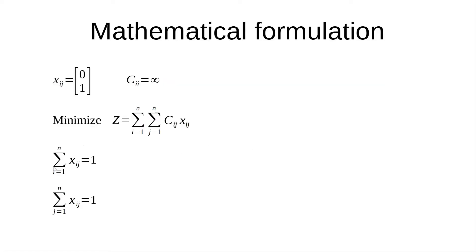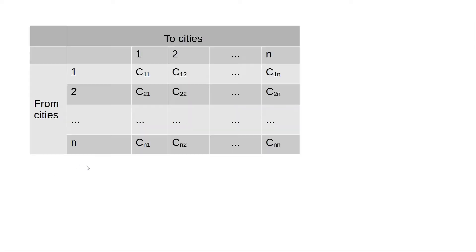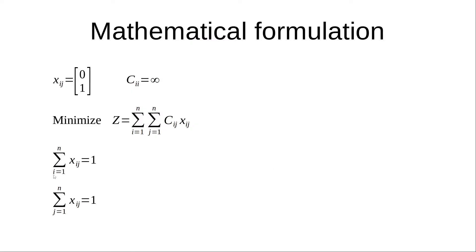Also, if we sum up the X values in any row, it has to be 1, because from city number 1 we can only travel to one city at a time — so it necessarily has to be 1. Similarly, the sum of X values in any column should also be 1. So: summation I=1 to N of Xij equals 1, and summation J=1 to N of Xij also equals 1.